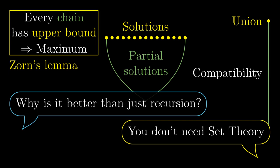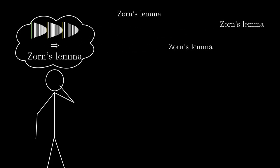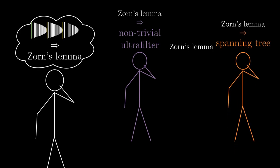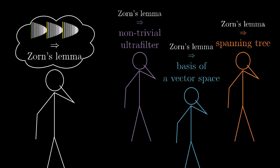And that's how mathematics works. One mathematician using one theory derives a tool that doesn't need the theory from the outside and provides the tool to others. Other mathematicians can then use the tool for their own theories without having to care about the underlying theory.